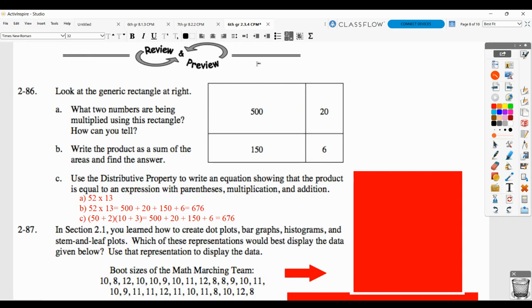So what you end up having to find is that it should be 50 plus 2, meaning 52, times 13, which would be 10 plus 3. And that works because 10 times 50 would be 500, 10 times 2 gives you 20, 3 times 50 gives you 150, and 3 times 2 gives you 6.